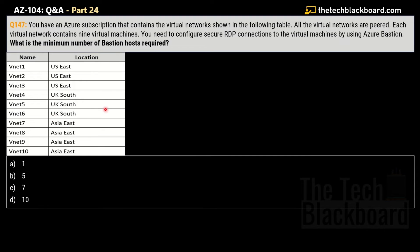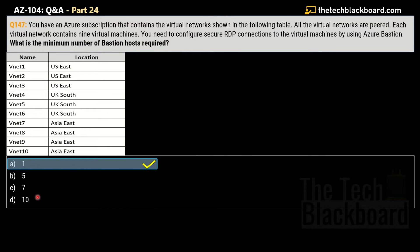Question number 147 says you have an Azure subscription that contains virtual networks as shown in the following table. All the virtual networks are paired — please mind this — and each virtual network contains nine virtual machines. You need to configure a secure RDP connection to the virtual machines using Azure Bastion. What is the minimum number of Bastion hosts required? Options are 1, 5, 7, or 10. The correct answer is option A — 1, because all the virtual networks are paired.